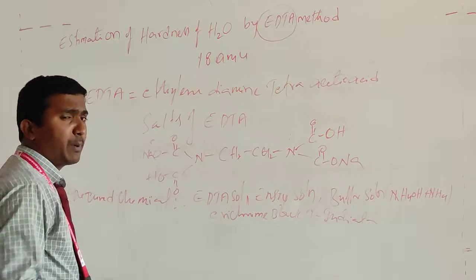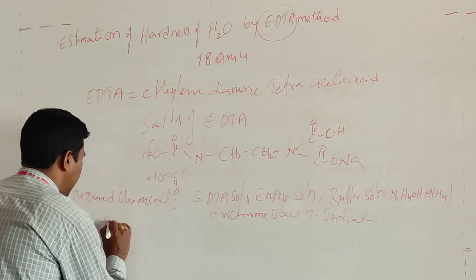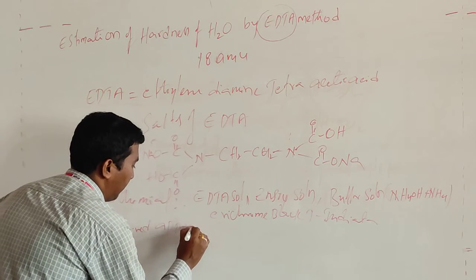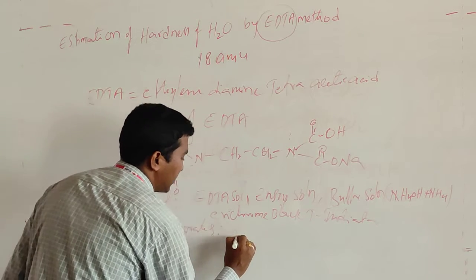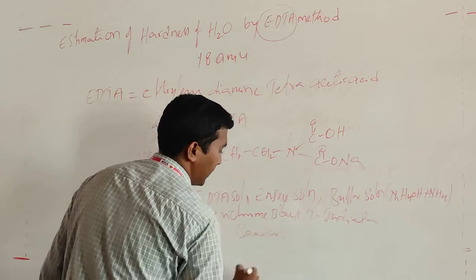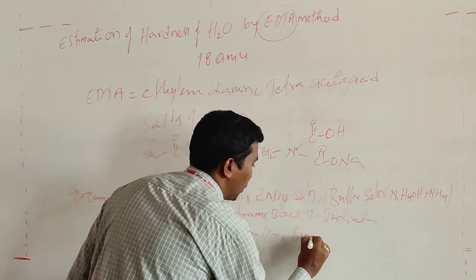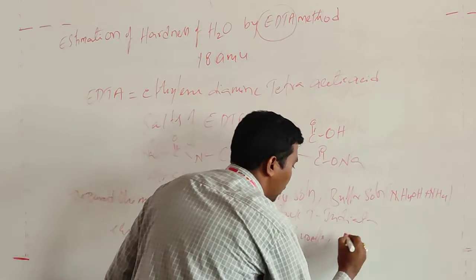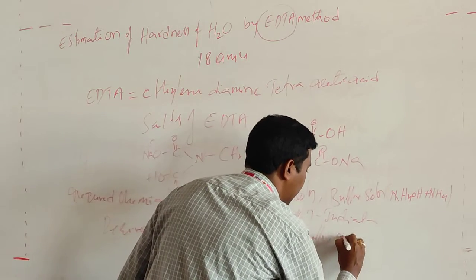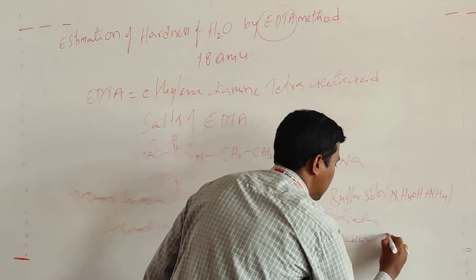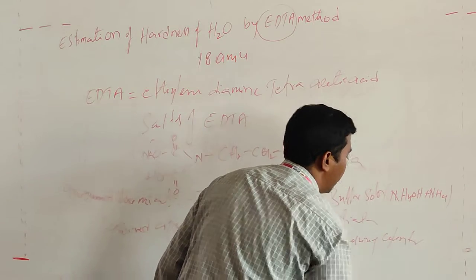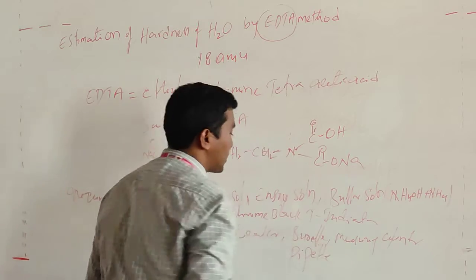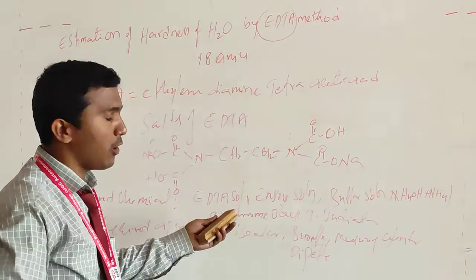What are the required apparatus? The required apparatus are: beaker, burette, measuring cylinder, and pipette.